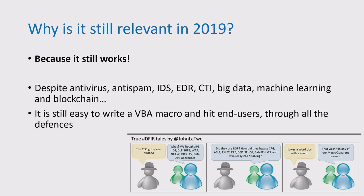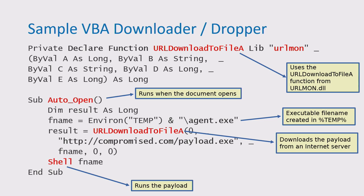Why are we still talking about macros in 2019? Simply because it works. We have anti-virus, anti-spam, IDS, EDR, CTI, machine learning — whatever. But it's still easy to write a 10-line VBA macro, send it by email, and it will cross all defenses and hit end users. The only line of defense today is the end user with one or two buttons. A malicious macro calls a DLL like URLDownloadToFile, downloads a file from the internet, saves it to a temp file, and runs it. It's extremely easy to write and obfuscate.